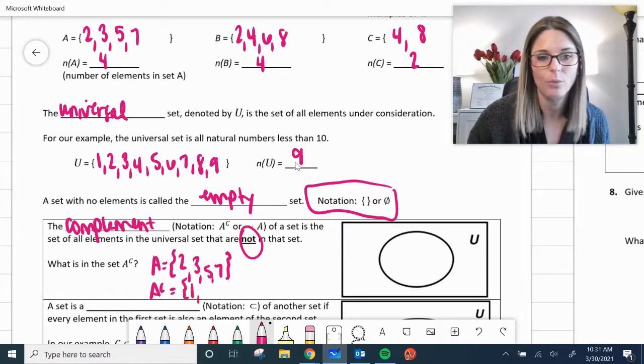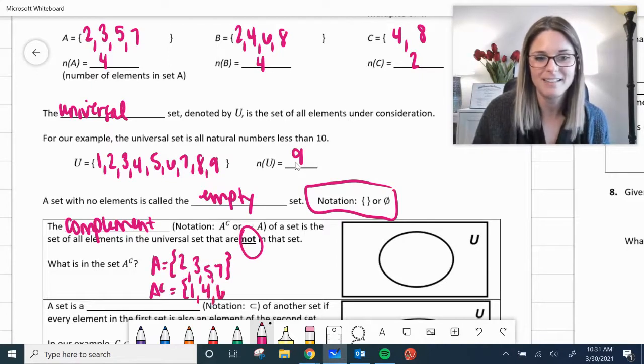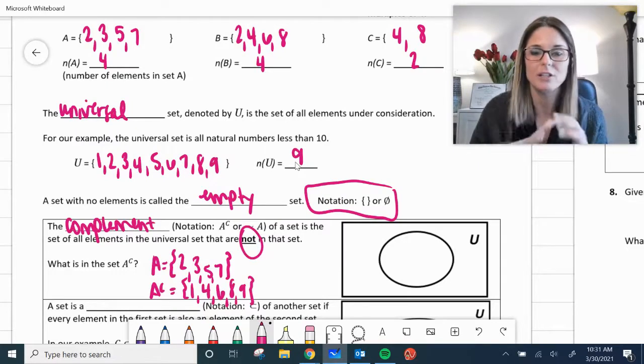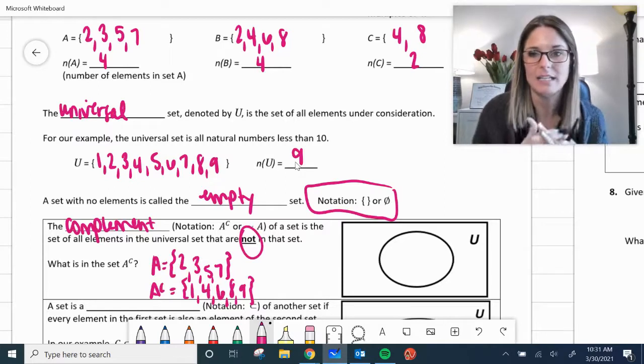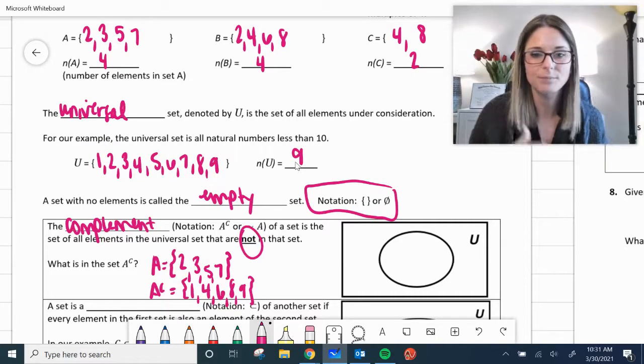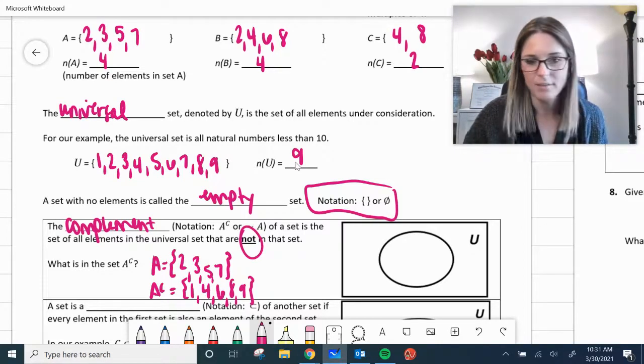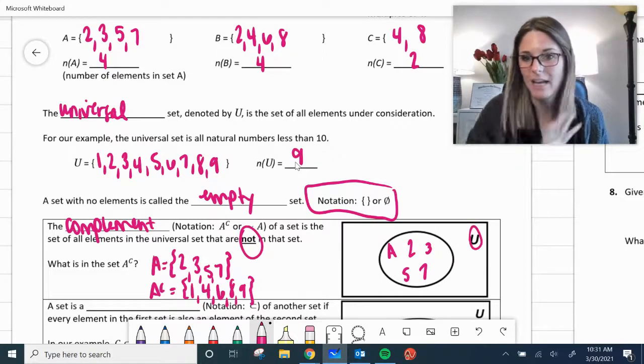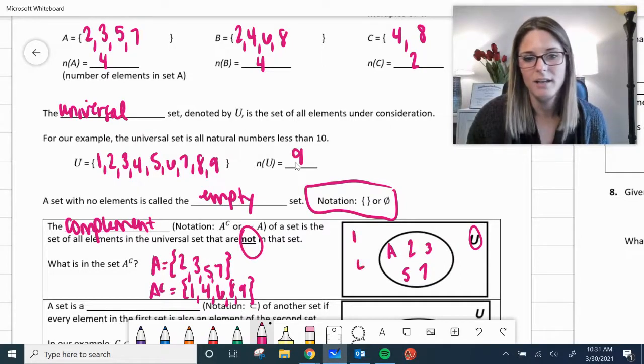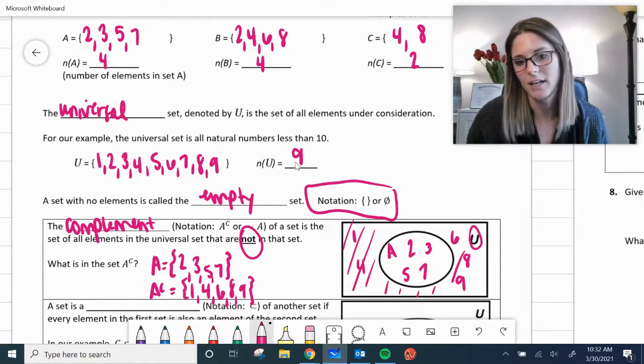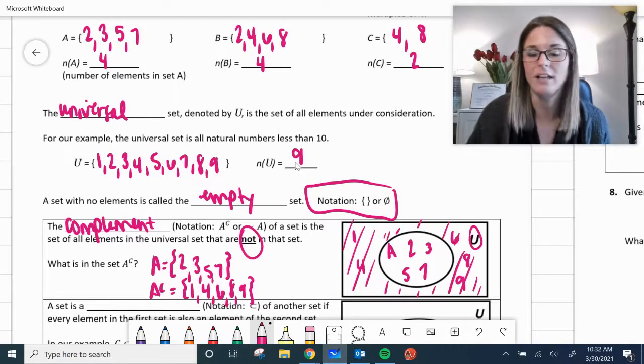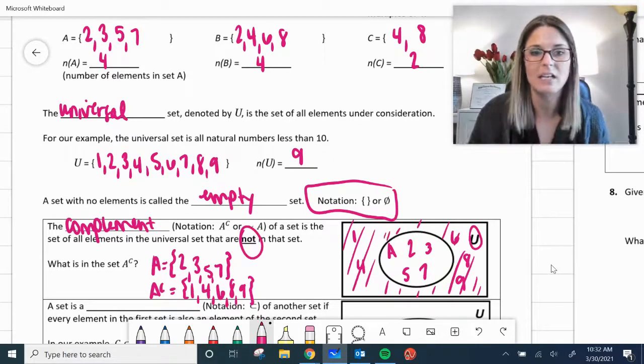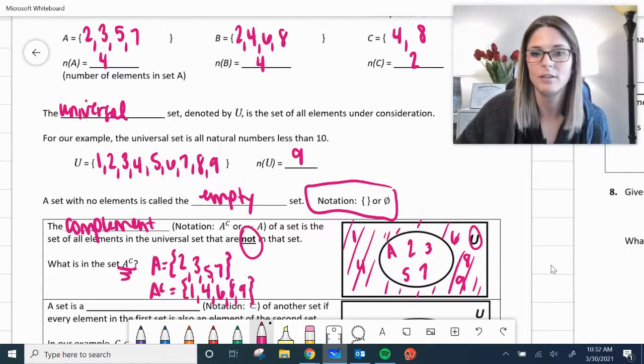So what would be the complement of A? Everything that's not in there. 1, 4, 6, 8, and 9 would be the complement of A. So if you wanted to show it in a Venn diagram and as we're looking at these set notations, it is helpful to look at Venn diagrams to kind of just put a visual to it. So this is going to represent A, our set A. And everything that was in there was 2, 3, 5, and 7. And then the outside you see that U for universal set is everything else had 1, 4, 6, 8, and 9. And we're talking about the complement. So all of this shaded area, all the ones that are being considered that are not in A. So your complement is not. Also note that the notation's there. Two different ways to write it.